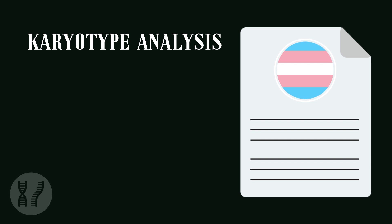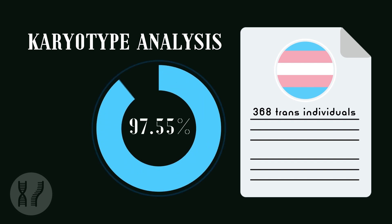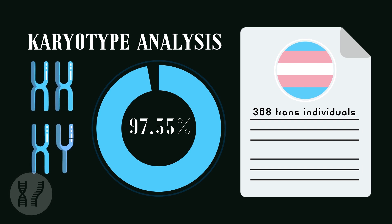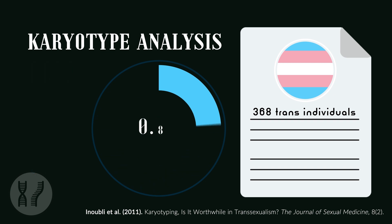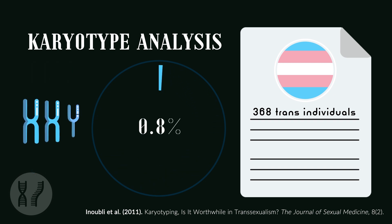In one study conducted with over 300 trans individuals, 97.55% had typical karyotypes of XX or XY, matching their birth sex. Only 3 out of 368 had Klinefelter syndrome. Such studies show us that using chromosomal anomalies to explain trans experience is ignorant or dishonest.